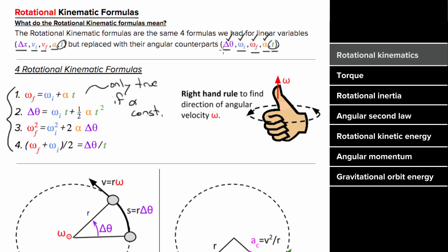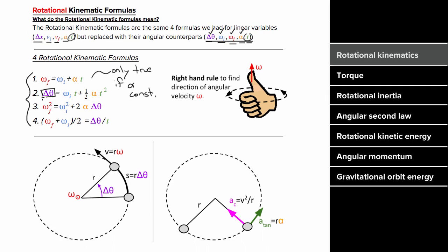What do each of these rotational variables mean? The angular displacement is the amount of angle the object has rotated through in a certain amount of time t. Angular velocity is defined to be the amount of angle you've rotated through per time, just like regular velocity is the displacement per time. Angular acceleration is defined to be the amount of change in angular velocity per time, just like regular acceleration is the change in regular velocity per time.